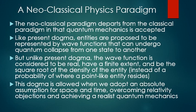But what about quantum mechanics? The neoclassical paradigm departs from the classical paradigm in that quantum mechanics is accepted. Like present dogma, entities are proposed to be represented by wave functions that can undergo quantum collapse from one state to another. But unlike present dogma, the wave function is considered to be real, have a finite extent, and be the square root of the density of the entity, instead of just a probability of where a point-like entity may reside. This is allowed when we adopt an absolute assumption for space and time, overcoming relativity objections, and achieving a realist quantum mechanics.